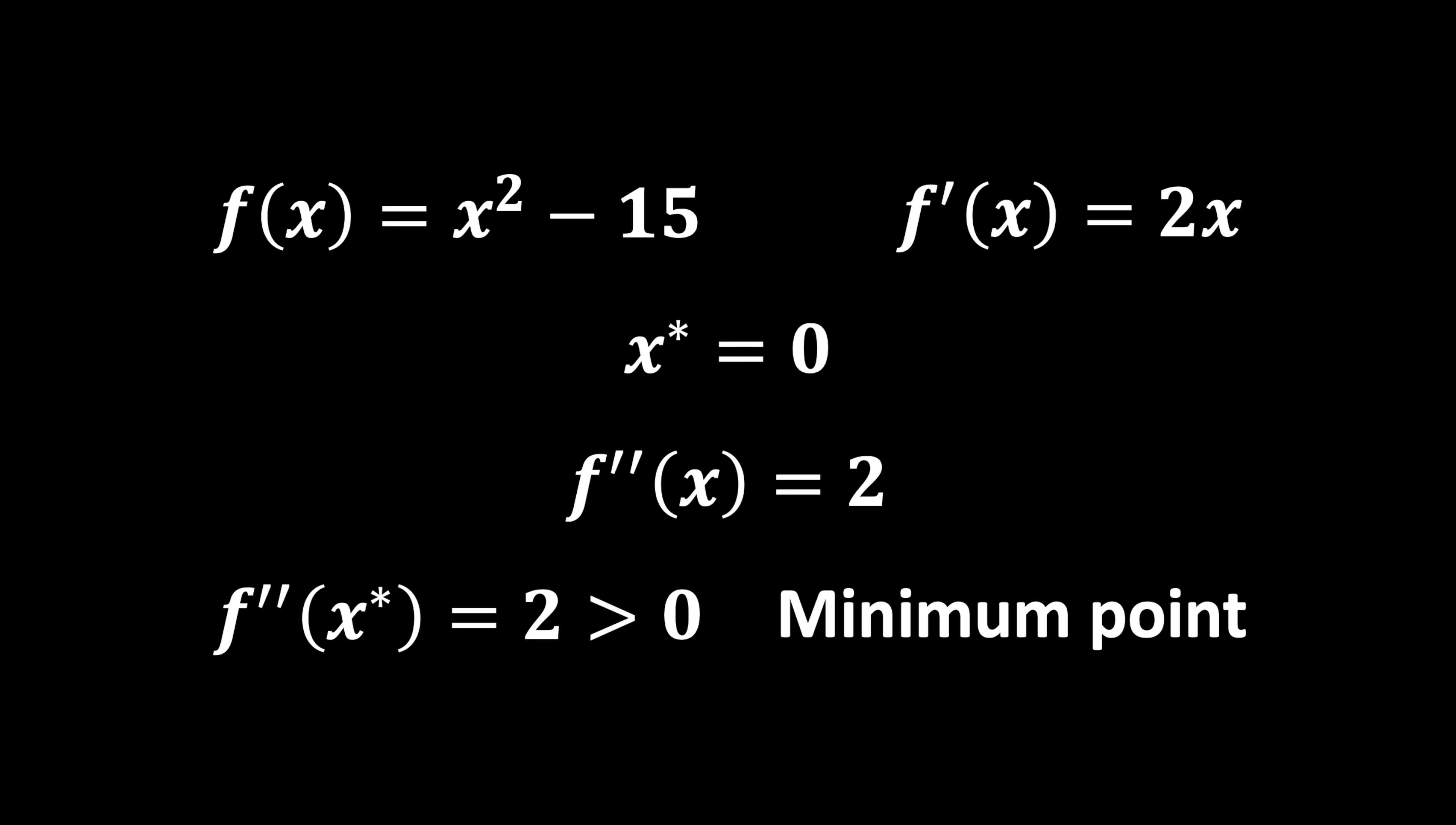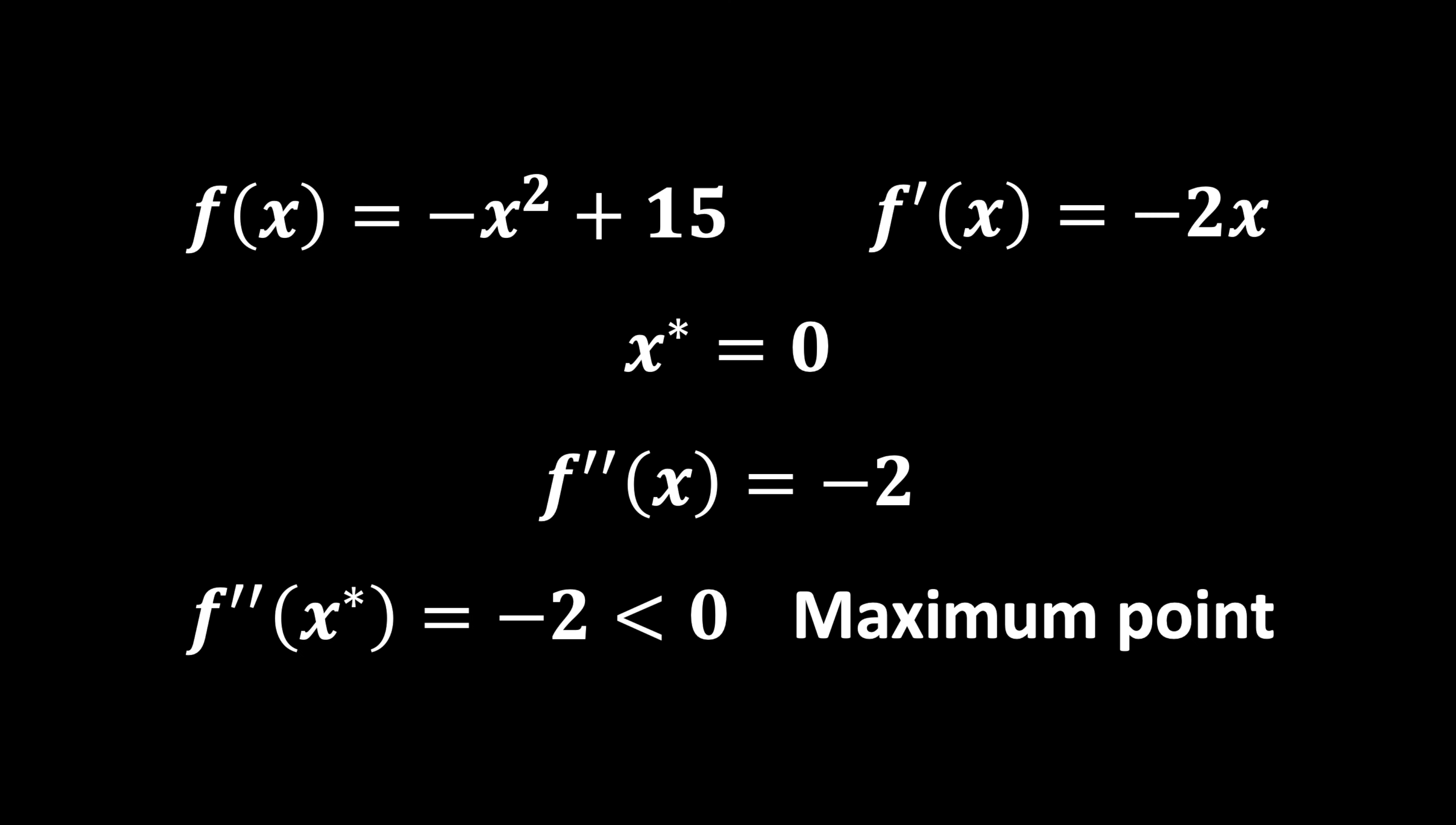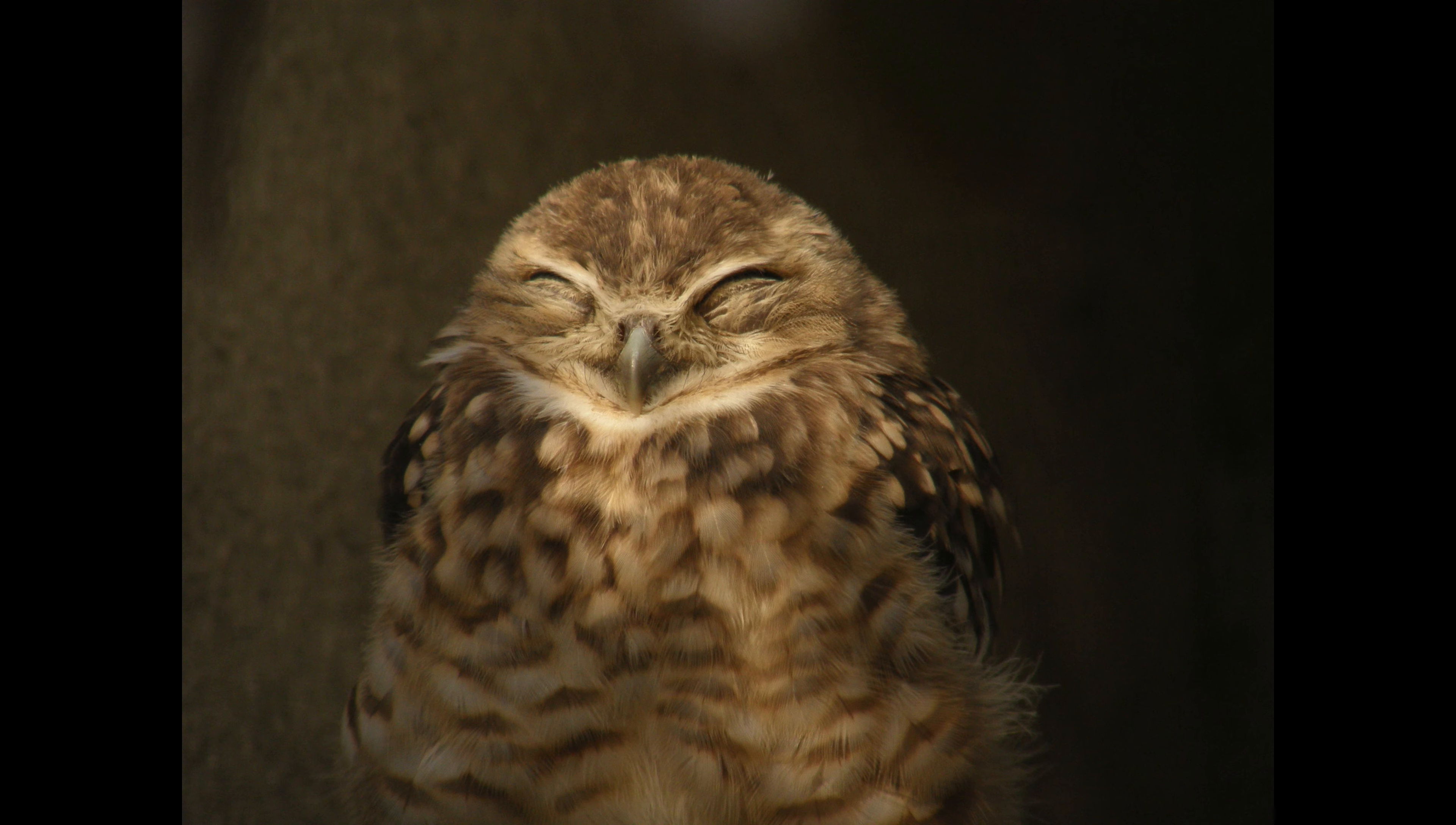If the second derivative at a certain point is positive, it means the function is curving upwards at that point. Picture the bottom of a ball or a valley curving up on both sides. That's a minimum. If the second derivative is negative, it means the function is curving downwards at that point. Picture the top of a hill or a dome, curving down on both sides. That's a maximum. This helps us distinguish between maximum and minimum points in a much more concrete way.